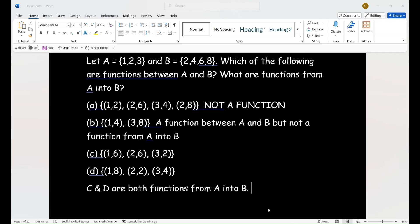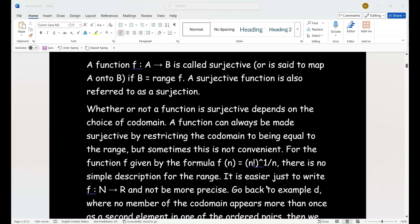Hopefully these are our responses here. The first one is not a function, part A, because two is related to both six and eight. Part B is a function between A and B, but it's not a function from A into B. Why? Because two in A is not related to anything in B. And of course, part C and D, they're both functions from A into B. That brings us to our next discussion of the types. There are three more types of functions or definitions that you need to know about. We need to talk about surjective, surjective function.